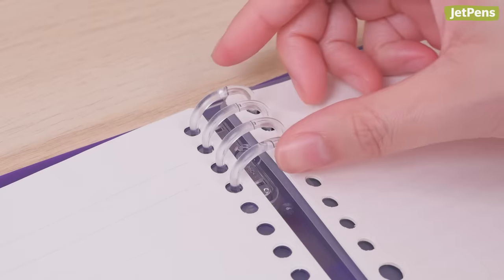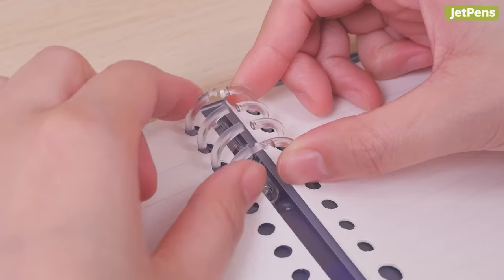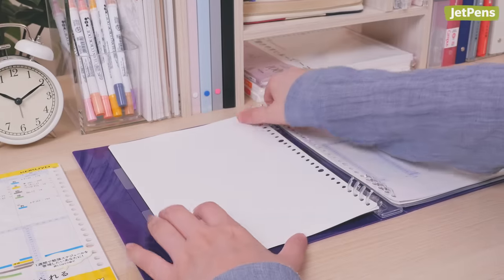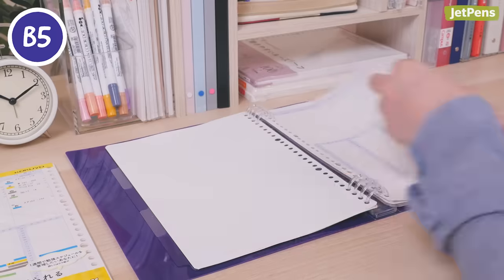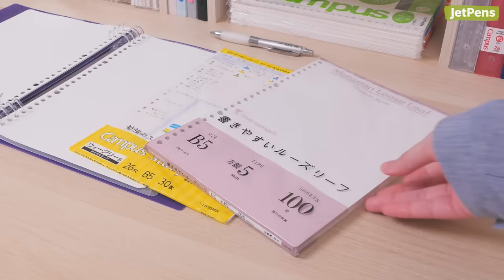It's easy to refill the binder, too. Just pinch the rings on the right side to pop them open. This binder is compatible with any 26-hole B5 paper, so you can use it with your favorite Kokuyo Campus or Maruman Easy-to-Write Loose-leaf Papers.